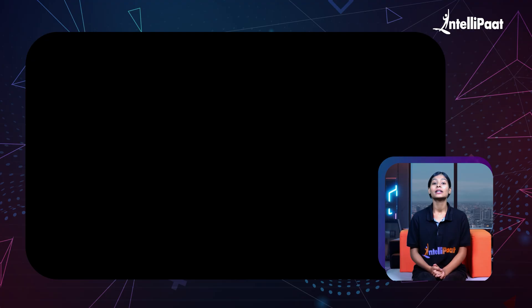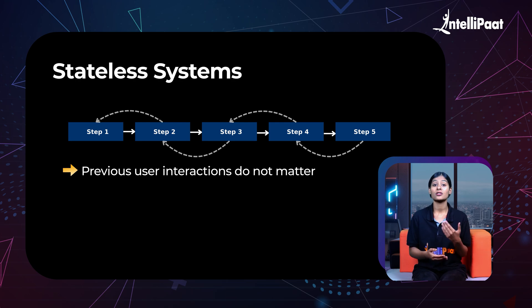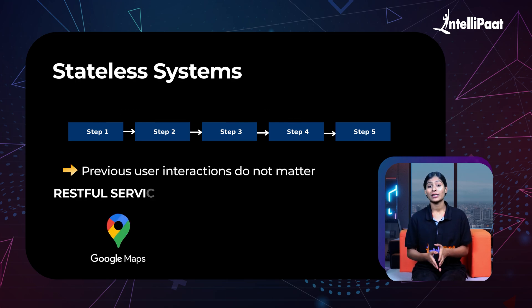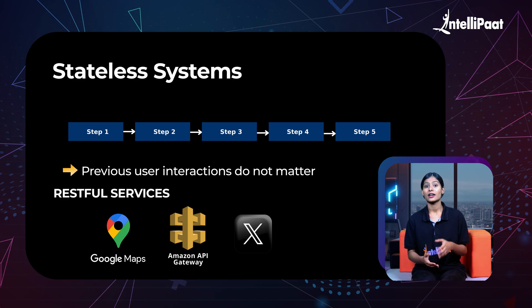Finally, if the user proceeds to checkout, the system needs to retrieve the item the user added to the cart — the laptop. Stateless systems, on the other hand, are used when the previous user interaction does not matter. RESTful services like Google Maps API, Amazon API Gateway, or X's API don't need to remember a previous state in order to fetch the data from their respective servers.